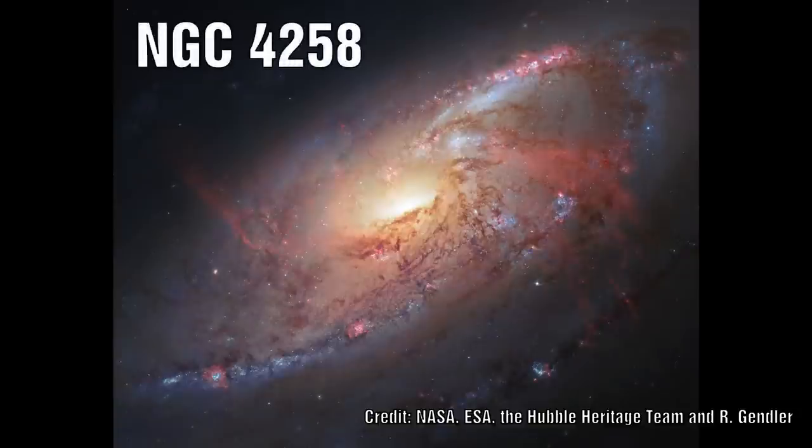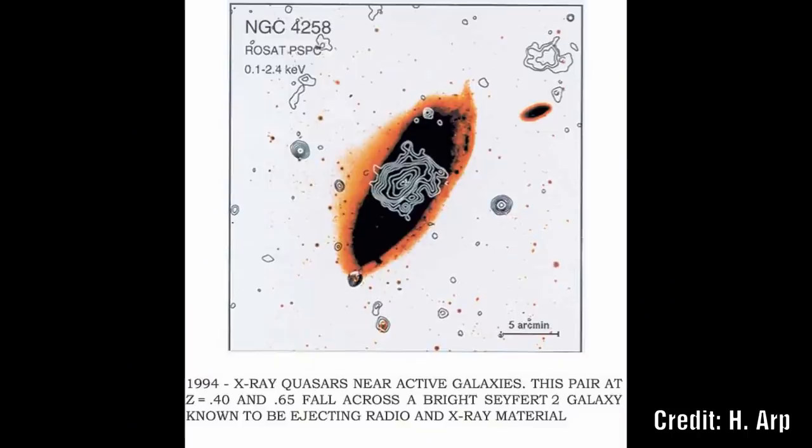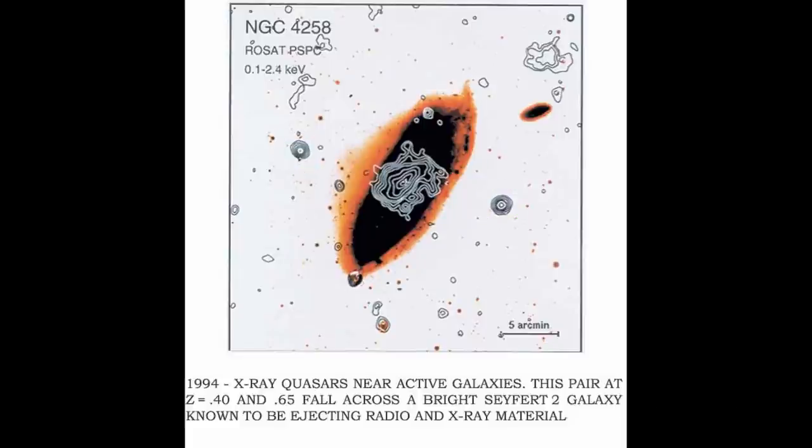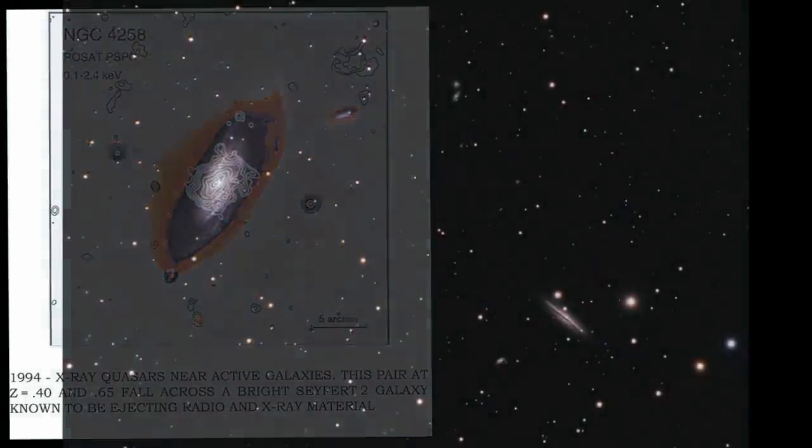NGC 4258. When this galaxy was observed in X-ray there were two conspicuous X-ray sources paired across the nucleus of the galaxy.